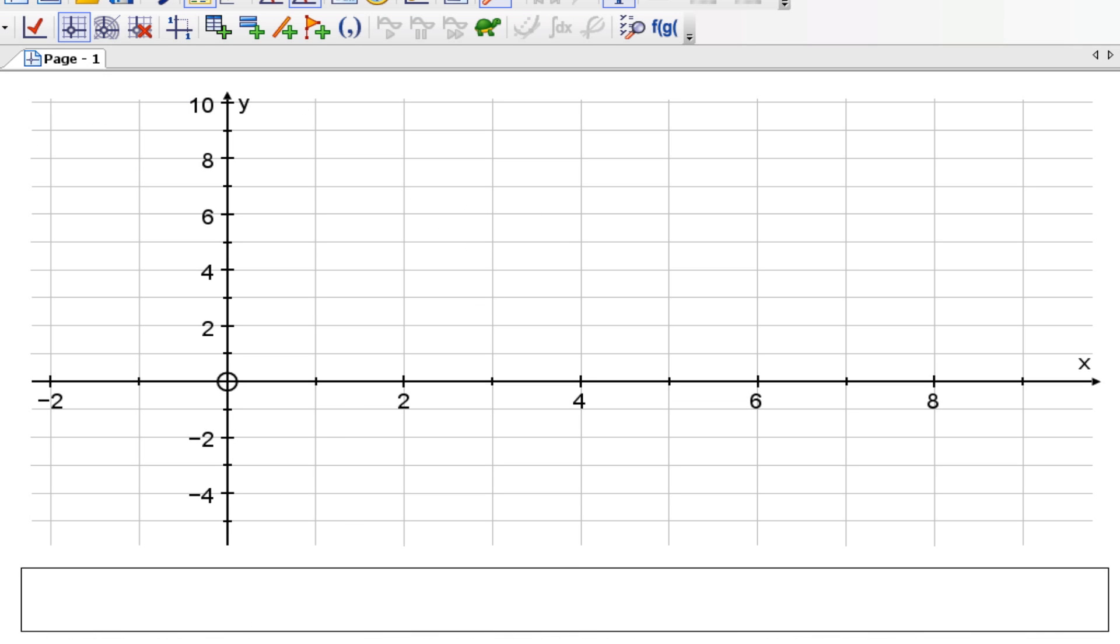And we're going to put a couple points on here. I'm going to put on the point 1, negative 3, which is here. And the other point I'm going to do is 7, 5.